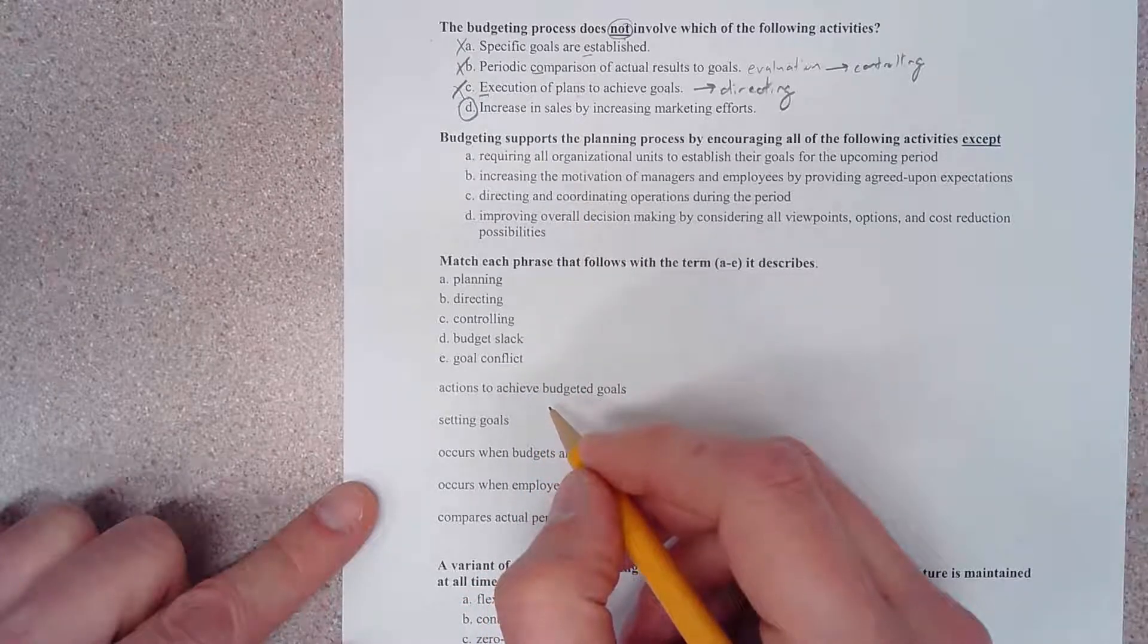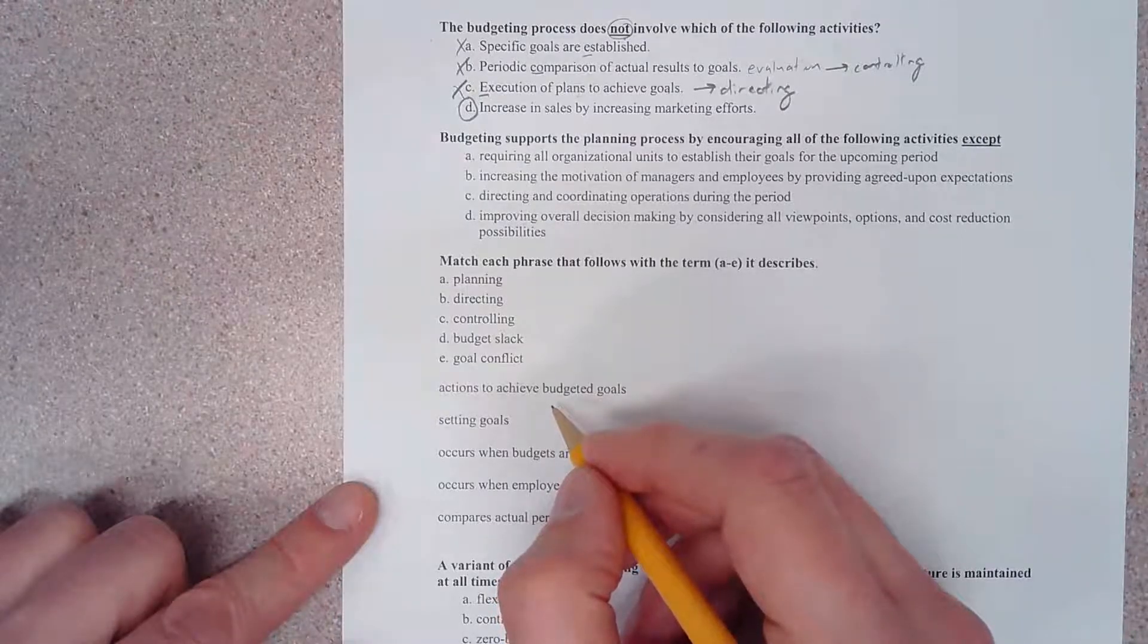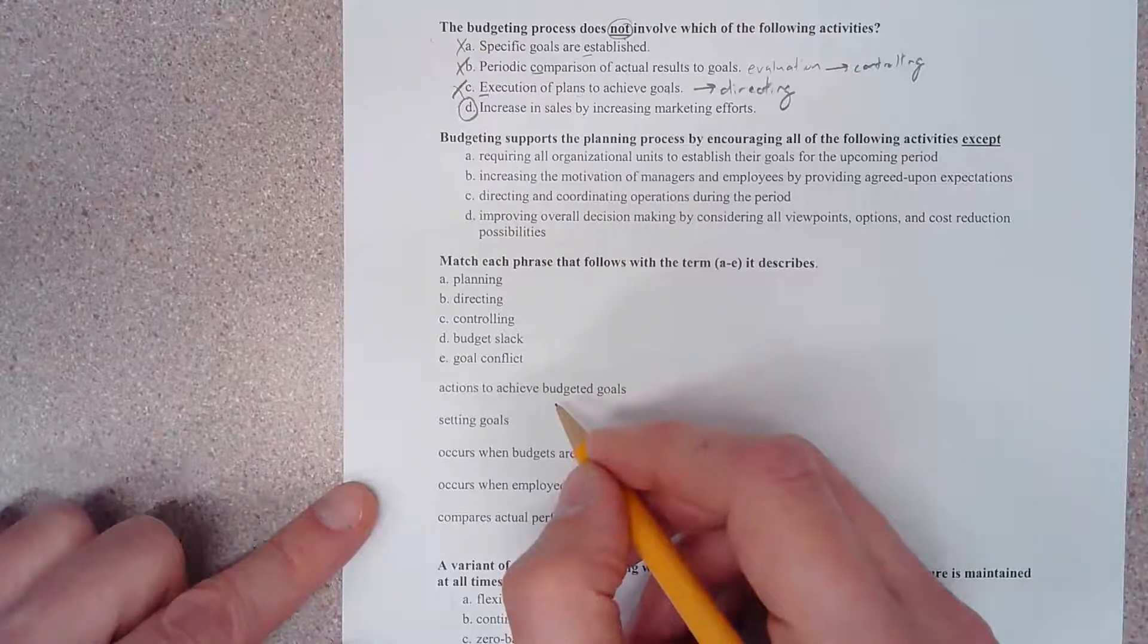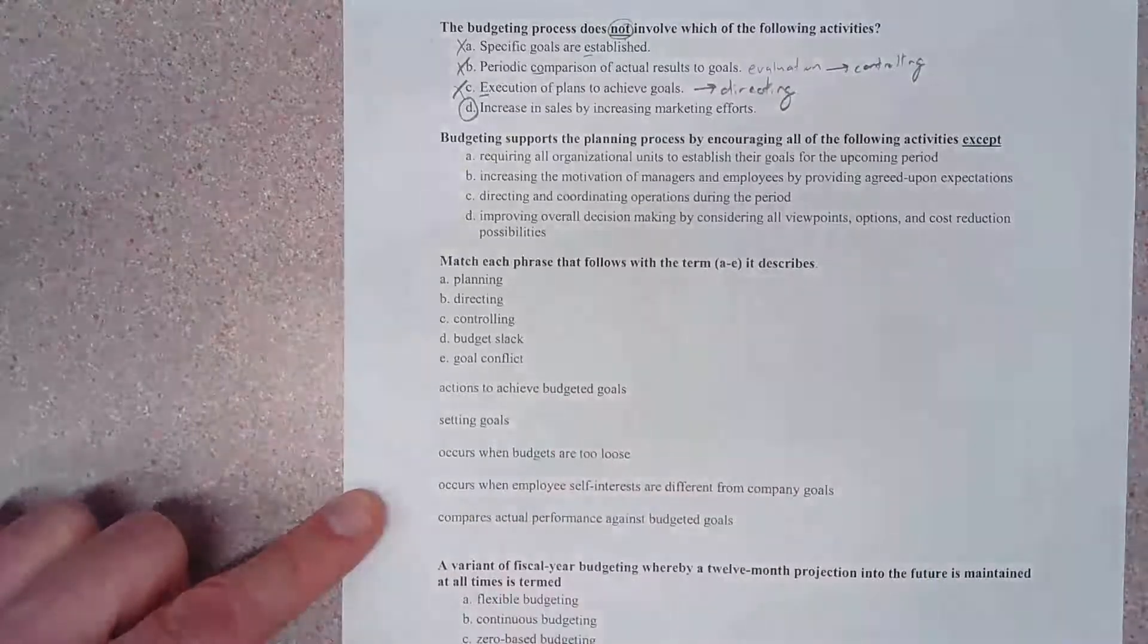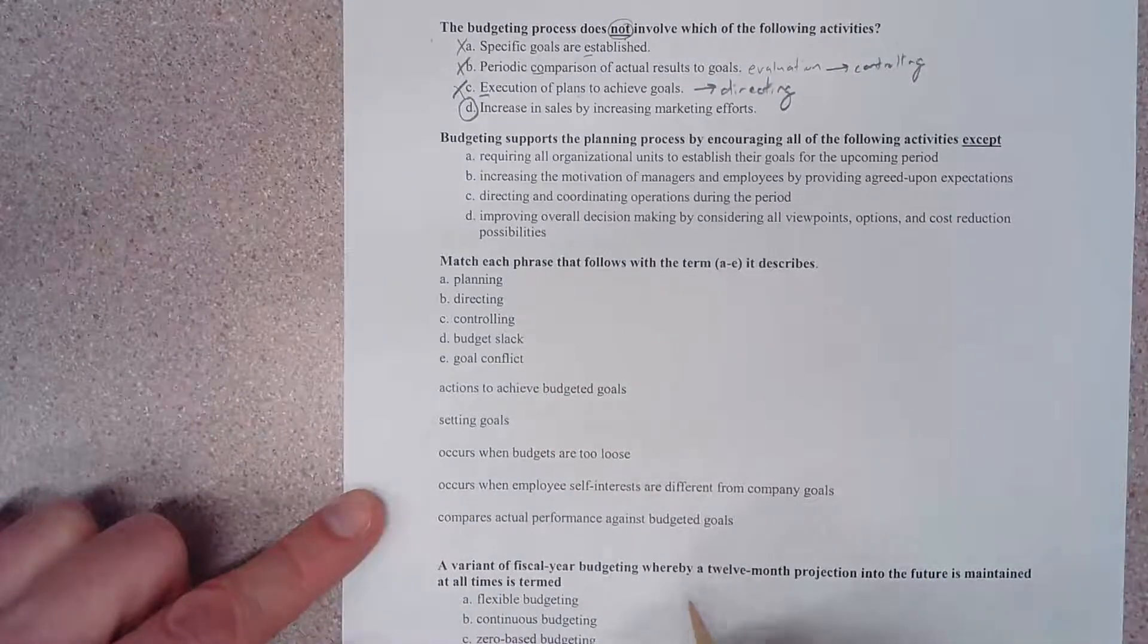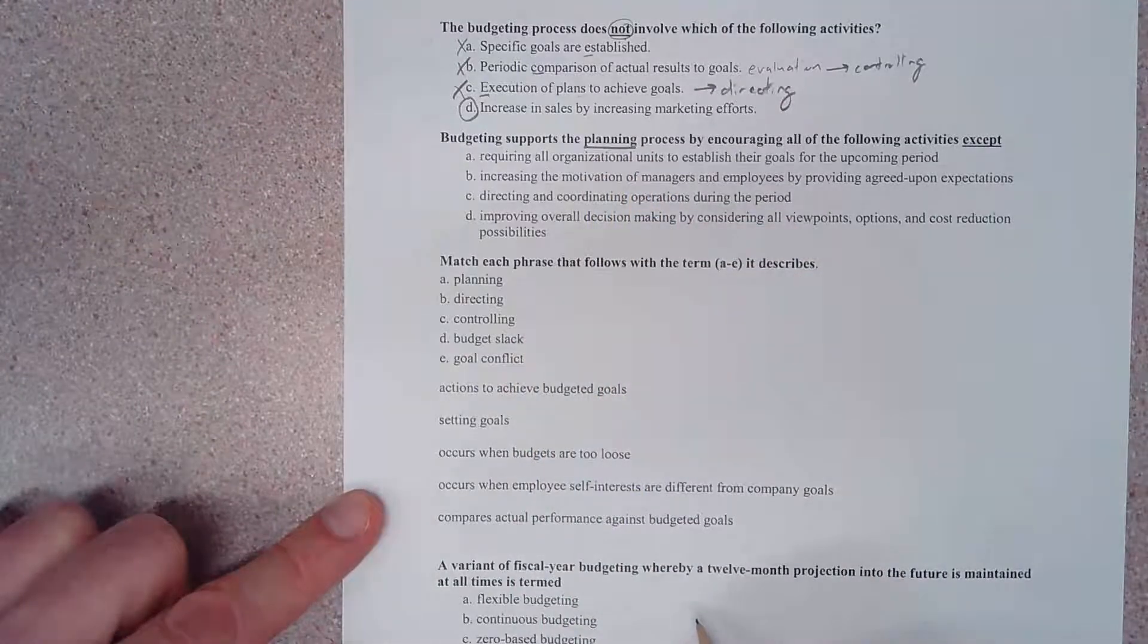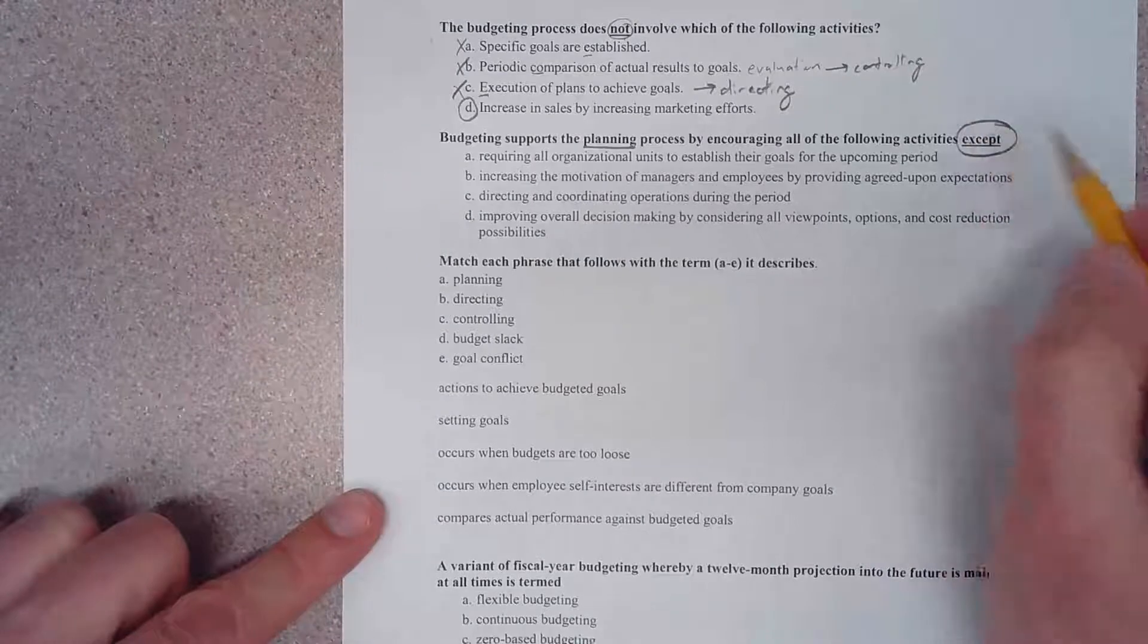That means that D must be correct. Let's double check. Increase in sales by increasing marketing efforts is not a part of the basic budgeting process. That is a part of business strategy. It is not a part of the basic budgeting process.